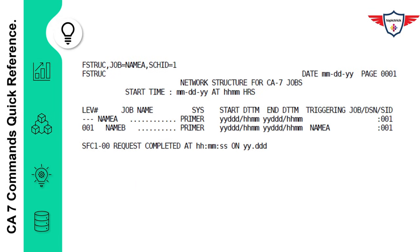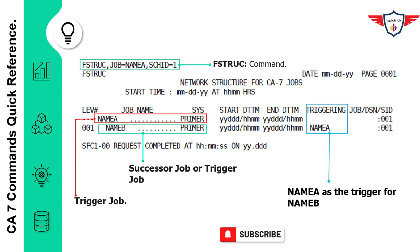When you scroll this screen forward, the system will display additional information related to Job A. If you look at the left-hand side of the screen, you'll notice Job A is listed on top because this is the job that will trigger Job B. Job B is a successor of Job A and is highlighted with green color, and all jobs triggered by Job A will be indented under it. In this case, we only have Job B listed under Job A. If you look at the column highlighted in blue — the triggering column — the second row shows that Job A is actually triggering Job B.